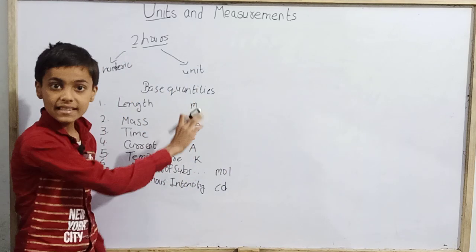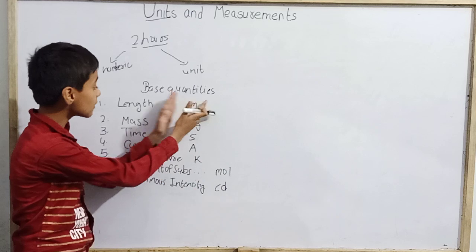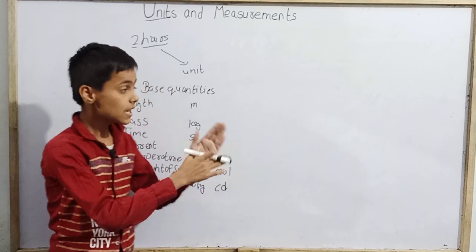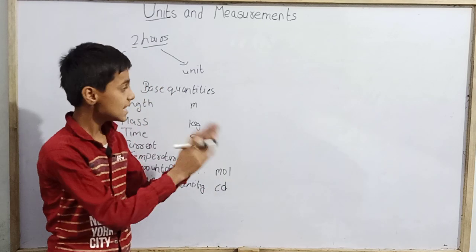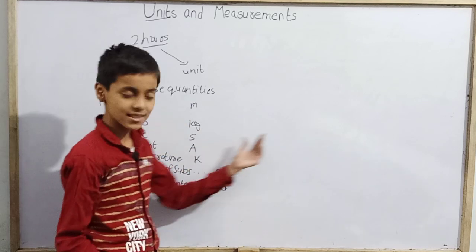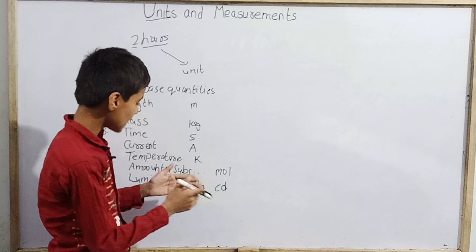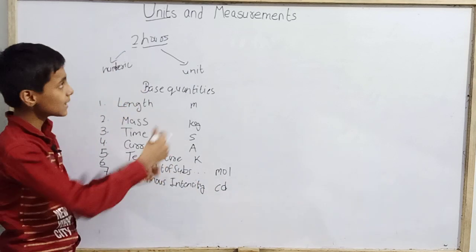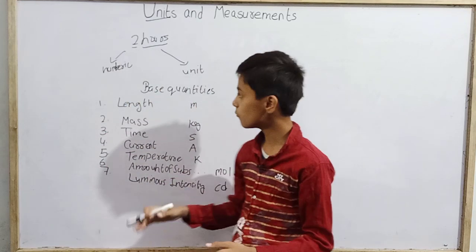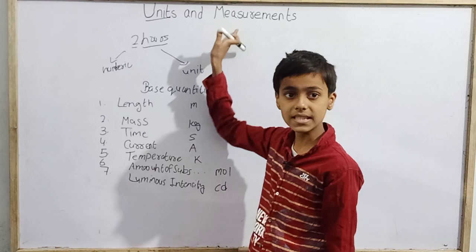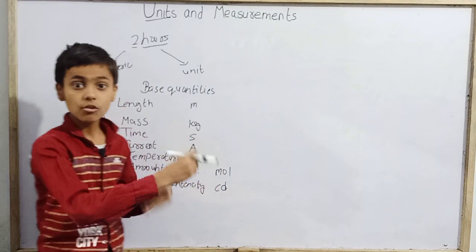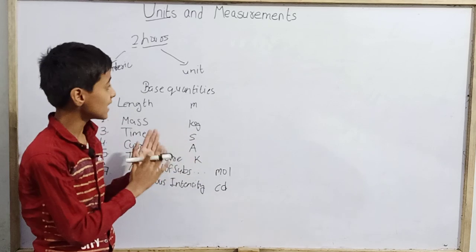The SI units for all the base quantities are called base units. Meter is a fundamental unit because it is the unit of a fundamental quantity. All units of derived quantities are called derived units. So we have base quantities and derived quantities, and correspondingly base units and derived units.